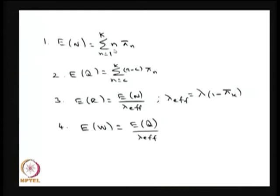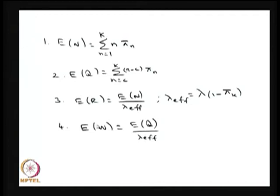After that, you can compute all average performance measures, as explained for M/M/1/N and M/M/C/infinity — the combination of those. You can get the average number of customers in the system, the average number in the queue — that is the summation from C to K of (N minus C) times pi N — and the average time spent in the system. Since it is finite capacity, you must find the effective arrival rate: lambda times (1 minus pi K), which is the probability the system is not full. Use this with Little's formula to get average time in the queue.